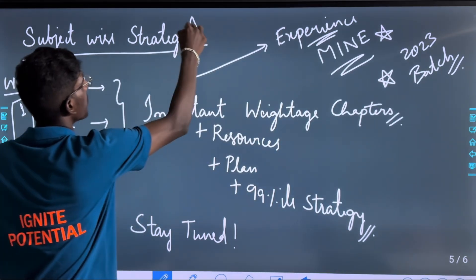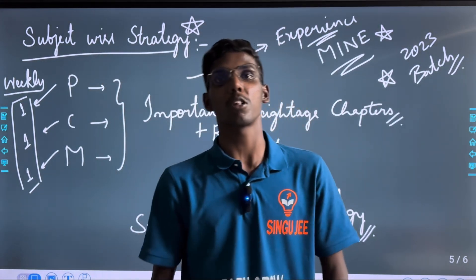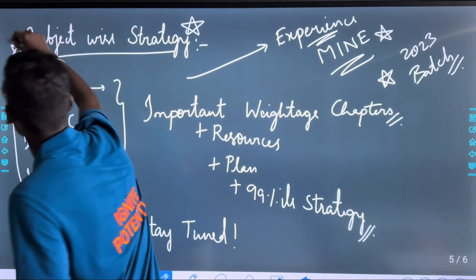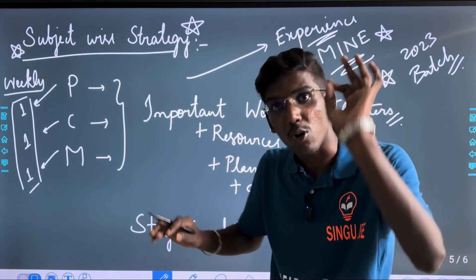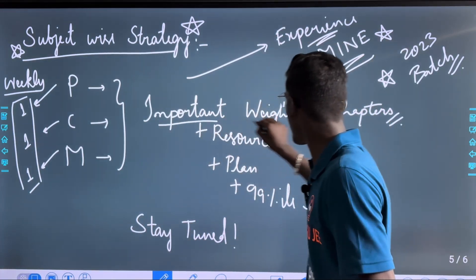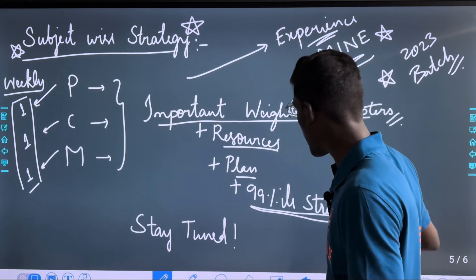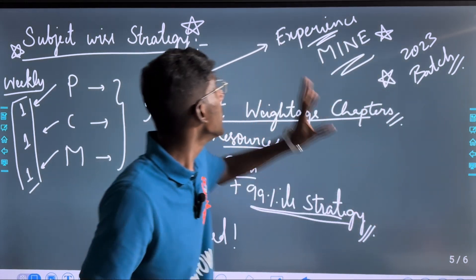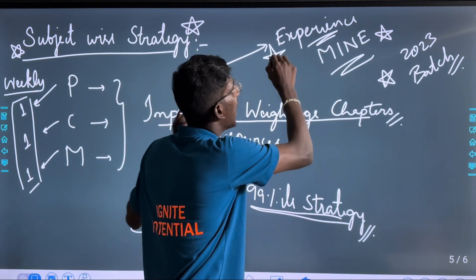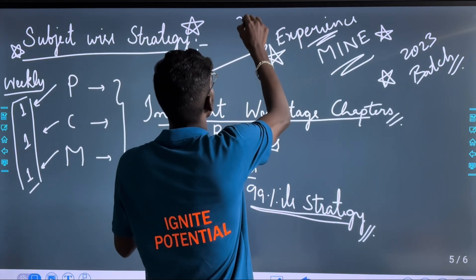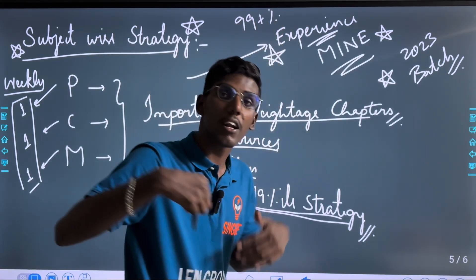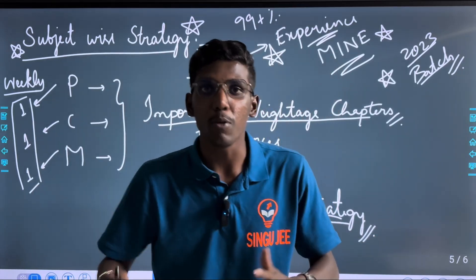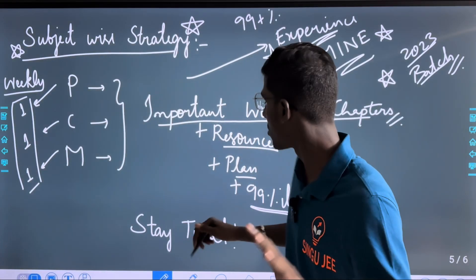Now for the subjective strategy. We have to look at what we do in PCM — important chapters, resources, plans, and percentage strategies for daily physics, chemistry, and maths. Including my own experience: I got 99 percentile in chemistry. I am from the 2023 batch. Stay tuned for physics and chemistry strategy.